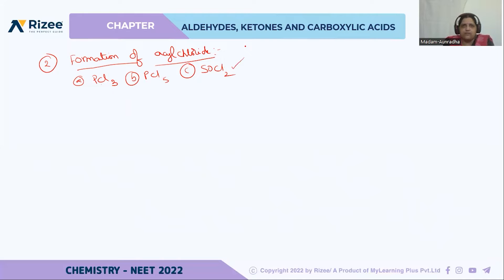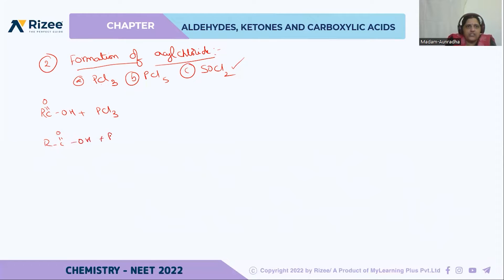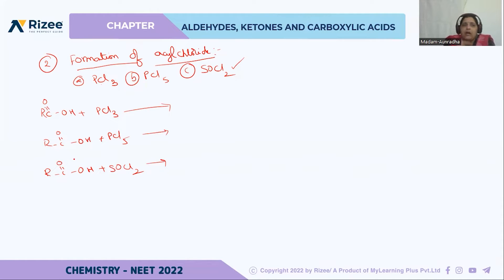Among all three, thionyl chloride is the mostly used one. If carboxylic acid (RC=O, OH) reacts with PCl3, PCl5, or SOCl2, in all three reactions one product is common — that is acyl chloride — but the byproducts differ.